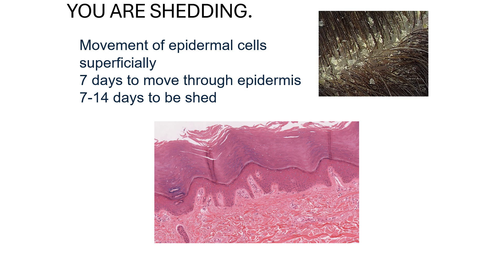By sloughing off, the epidermis becomes a conveyor belt of sorts, and the keratinocytes move from deep to superficial, rising through the strata spinosum, granulosum, lucidum — if present in thick skin — and corneum. Keratinocytes rise through the strata quite quickly, in about seven days, but it then takes the cells one to two weeks to completely shed off. This is why wounds can take two weeks to fully heal, as the damaged cells are sloughed off and replaced.